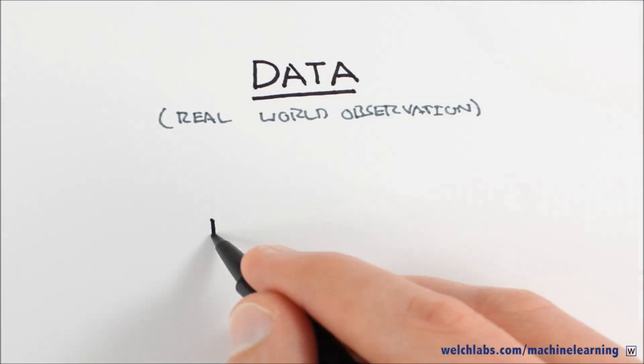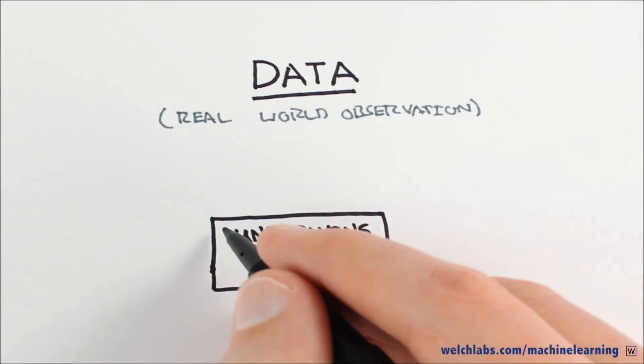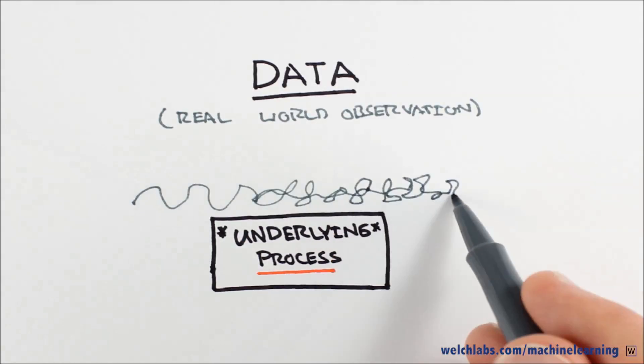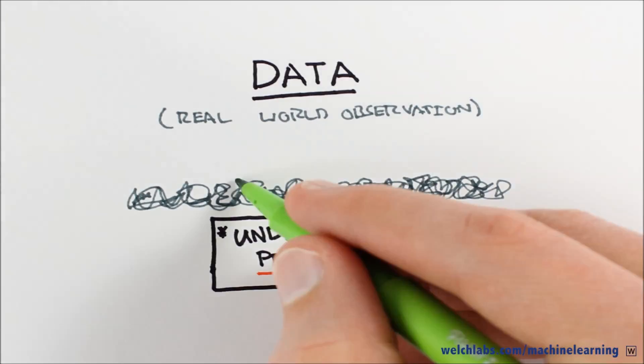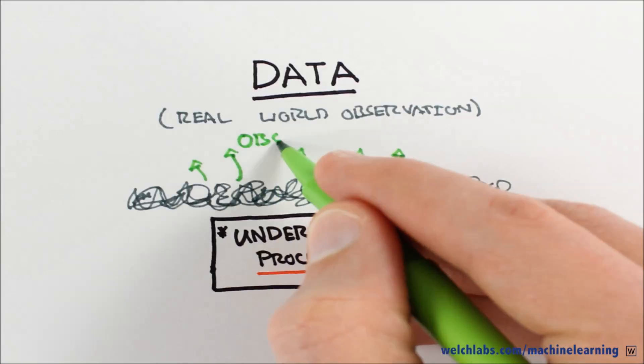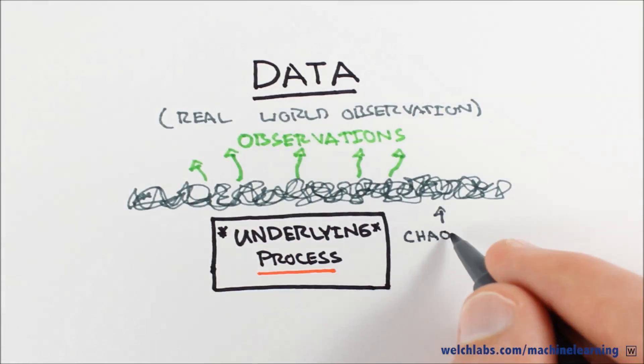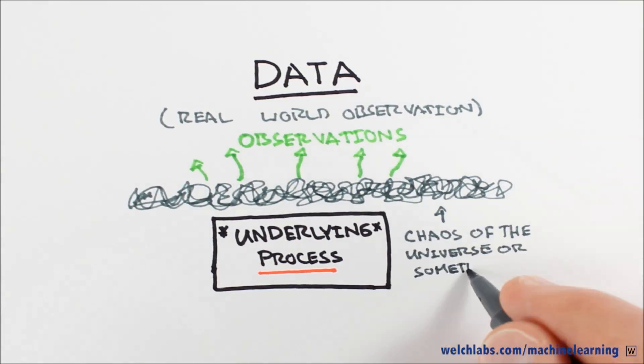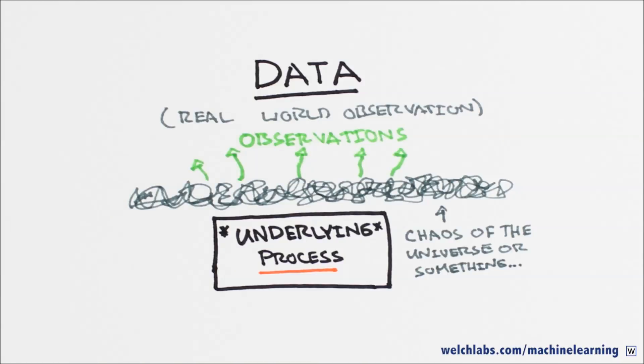Like a lot of data, our input and output values come from real world observations. The assumption here is that there is some underlying process and our observations give us insight into that process, but our observations are not the same thing as the process, they are just a sample.